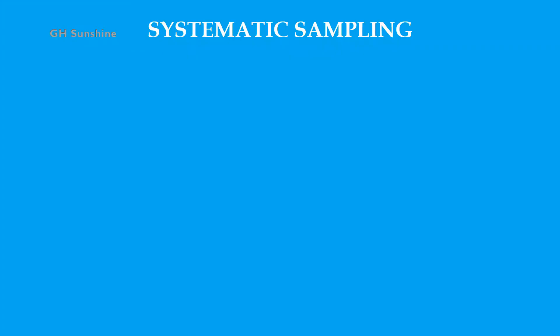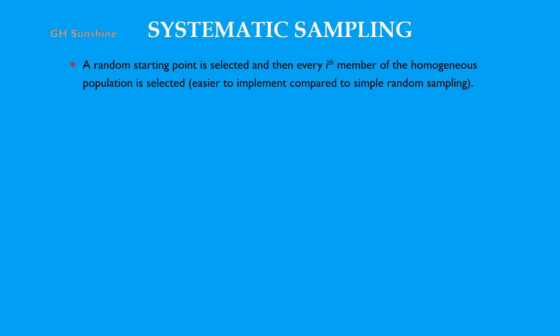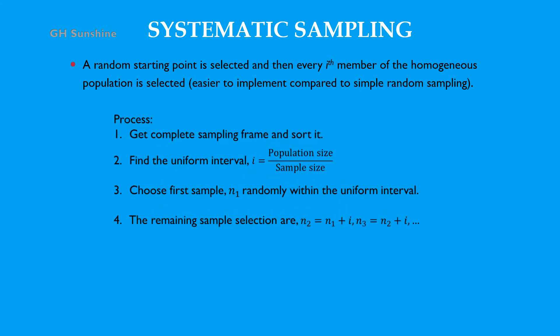Systematic sampling refers to selecting a random starting point and then selecting every k-th member of the homogeneous population. Like simple random sampling it requires a homogeneous population, but systematic sampling is easier to implement. The process is: first, get the sampling frame; second, find the uniform interval I, which equals population size divided by sample size; third, choose the first sample randomly within the uniform interval; then remaining samples follow the formula.